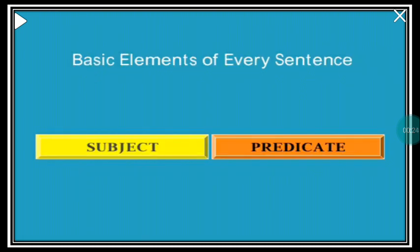This is a very important topic right up to the 12th standard, so you need to know individually the definition of each kind of sentence. What is the basic element of every sentence? Well, every sentence is made up of a subject and a predicate.